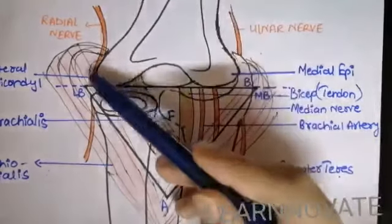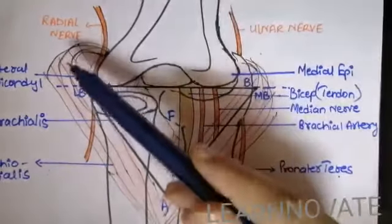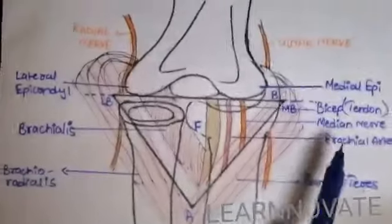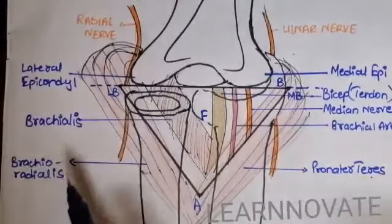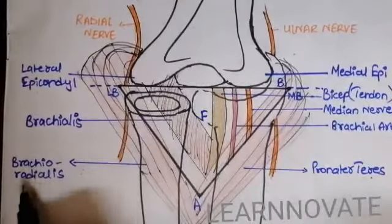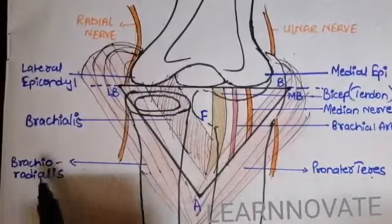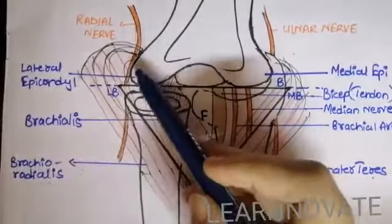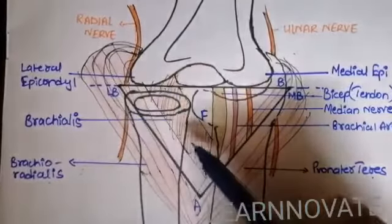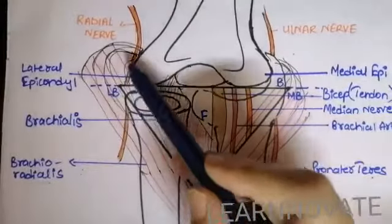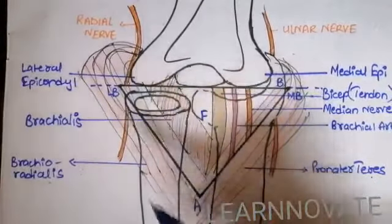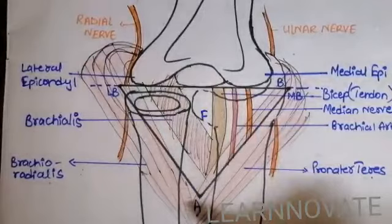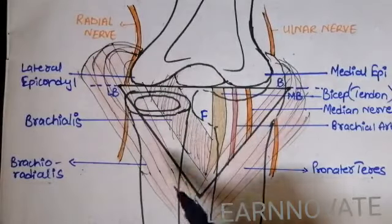The lateral boundary is formed from the muscle that we call as the brachioradialis. This brachioradialis muscle is going to form the lateral boundary of the cubital fossa, attached from the lateral epicondyle of the humerus and going to attach on the forearm.